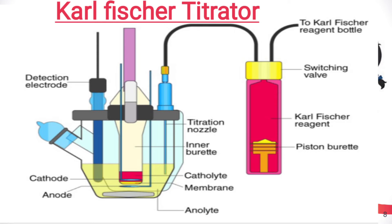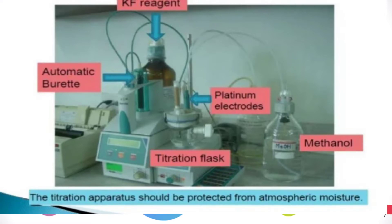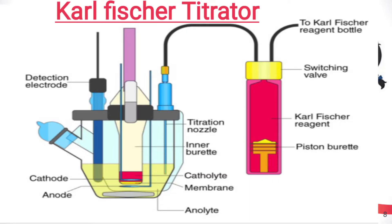Here is one more diagram of the titrator. On the top we can see the detection electrode, cathode, anode, anolyte, catholyte membrane, inner burette, titration nozzle, and piston burette. The basic ingredients of Karl Fischer reagent are filled inside this burette.